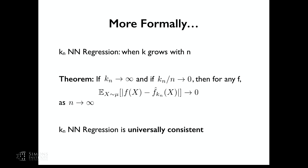Let's look at a theorem. You need the following conditions: as n grows, kn must go to infinity, and kn over n must go to zero. If these two conditions hold, then for any f, the expectation over x drawn from mu of (f(x) minus f-hat-kn(x))^2 goes to zero as n goes to infinity. This is called universal consistency — k-nearest neighbor regression is universally consistent.